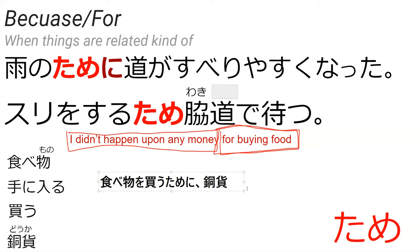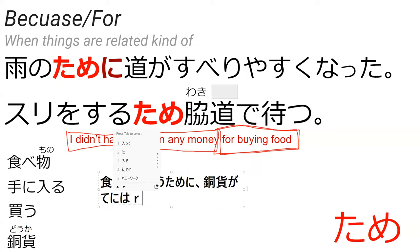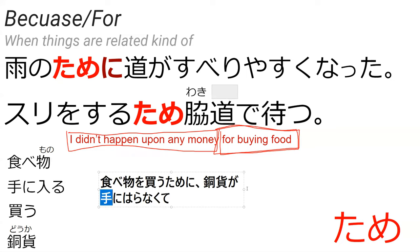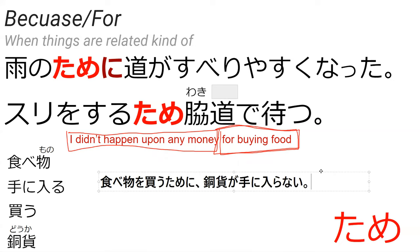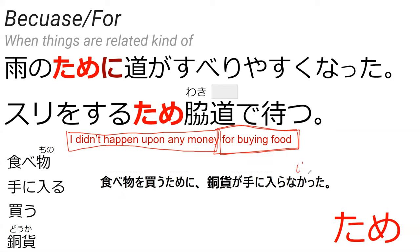You would need a complete verb form — you don't really normally end in te-form alone. So you could say hairanai, which is 'to not happen upon any money in order to buy food.' If you want this in past tense, we would do nakatta. The nai's ta-form is nakatta. So: tabemono wo kau tame, dooka ga te ni hairanakatta.